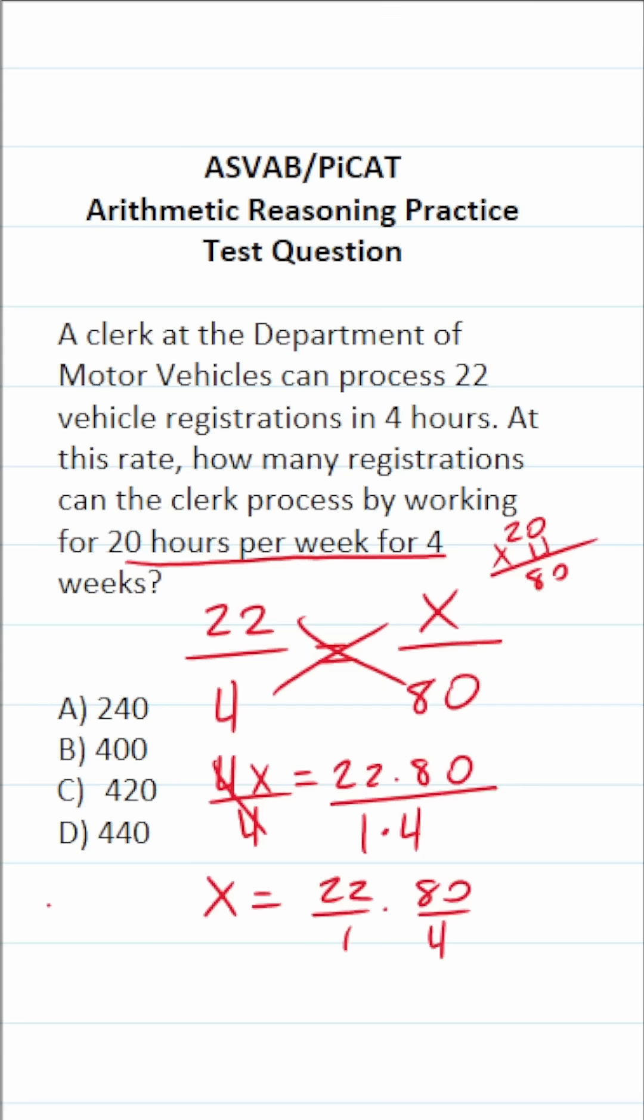Well, what is 80 over four? 80 divided by four is 20. So this becomes 22 over one is 22 times 80 over four, which is 20.